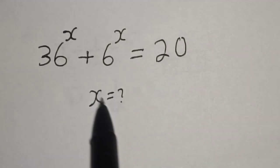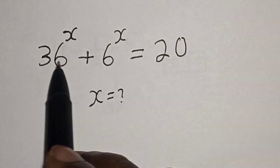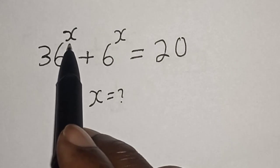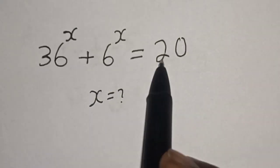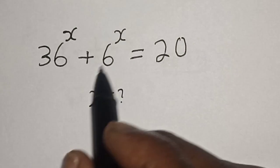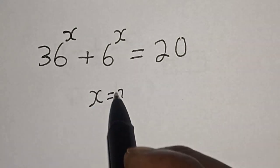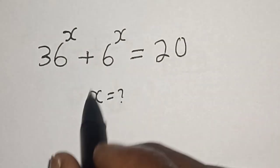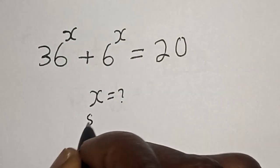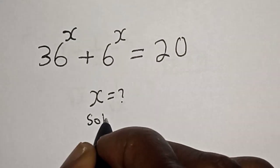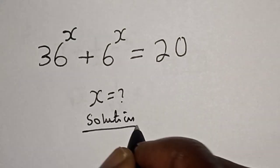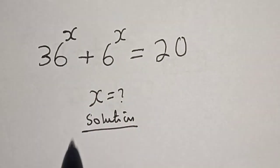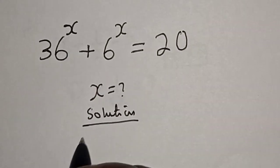Hi everyone, welcome to my class. In this class we want to find the value of s from this equation: 36 raised to power s plus 6 raised to power s is equal to 20. Before we proceed, please don't forget to like, share, comment and subscribe. Thank you.